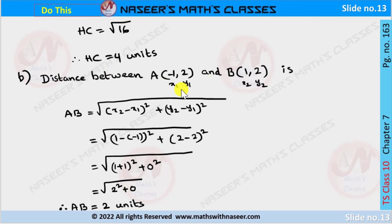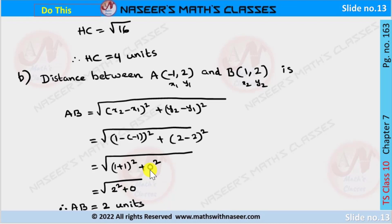Next, the distance between points A and B: A = (x₁, y₁) = (−1, 2) and B = (x₂, y₂) = (1, 2). Using the distance formula: AB = √((1 − (−1))² + (2 − 2)²) = √((2)² + 0²) = √4 = 2 units.